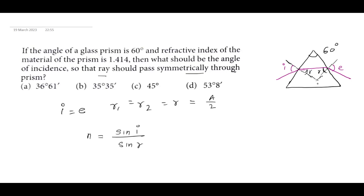To understand why r1 plus r2 equals A: if you consider the quadrilateral formed, two of its angles are 90 degrees. Then considering the triangle formed inside, the sum of its three angles is 180 degrees, which leads to the result that r1 plus r2 equals A. We have already discussed this derivation.